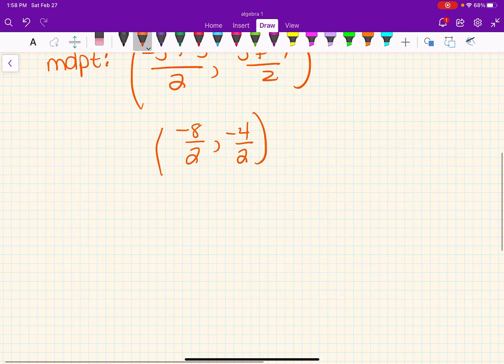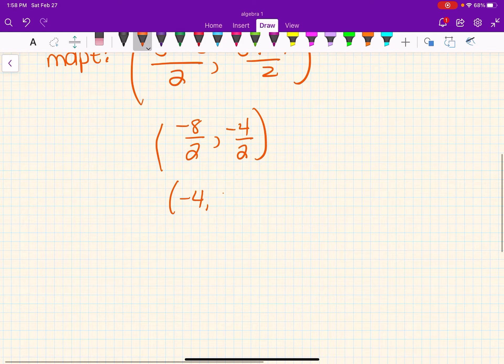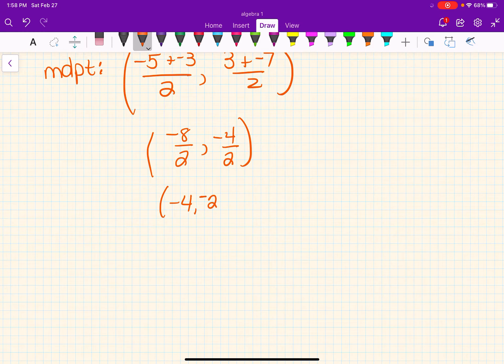Okay? Then if I want to show all the steps, you could do this. And then your final answer is going to be negative 4, positive, oh, negative 2. I have it wrong on my answer key there. Okay? So that's how you find the midpoint.